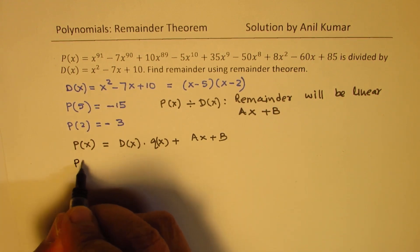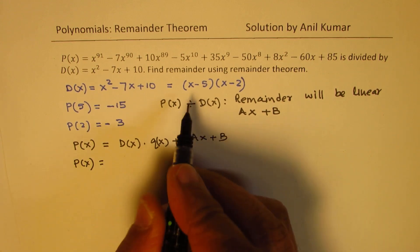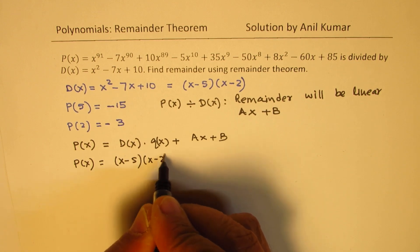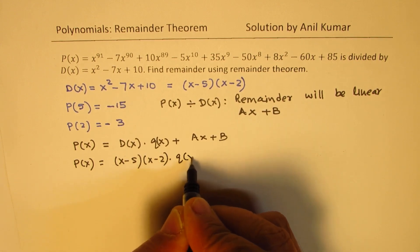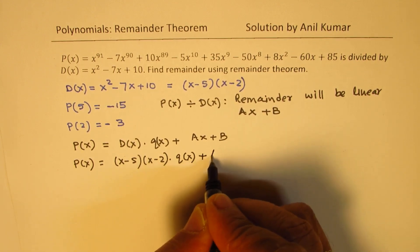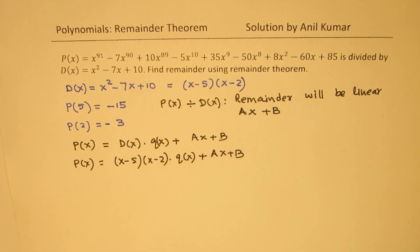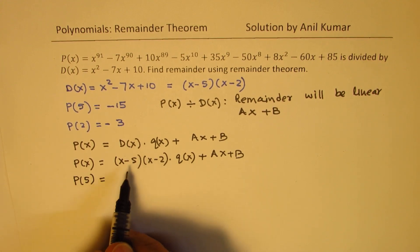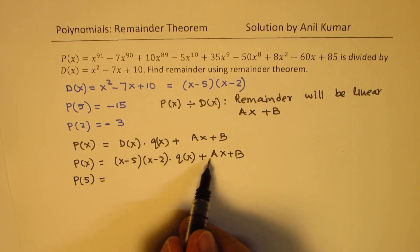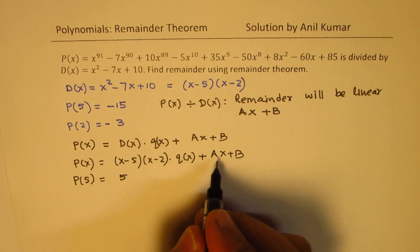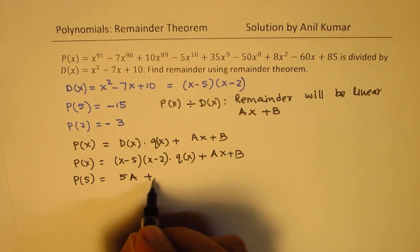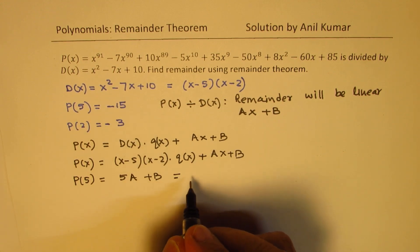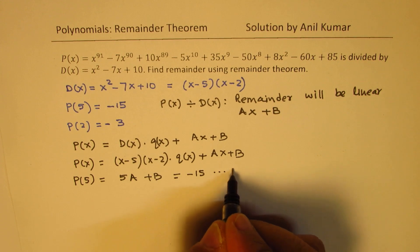Now the divisor here is given to us as (x - 5)(x - 2). The quotient is Q(x). It could be anything. We really don't have to find it. That's the beauty of this method. Now if I substitute 5 for x, then this term becomes 0, and what we are left with is 5A plus B, and we know P(5) is minus 15. So we get one of our equations.